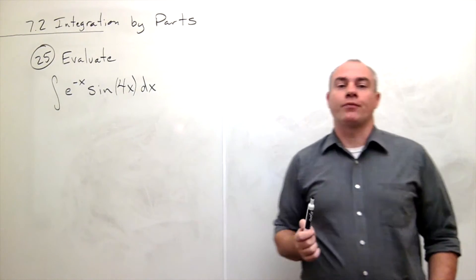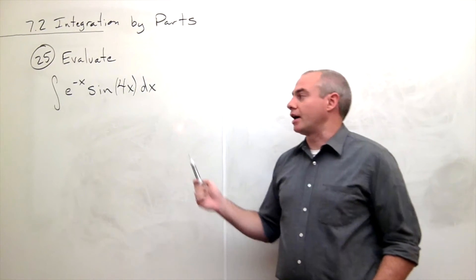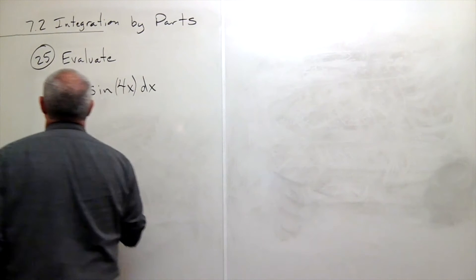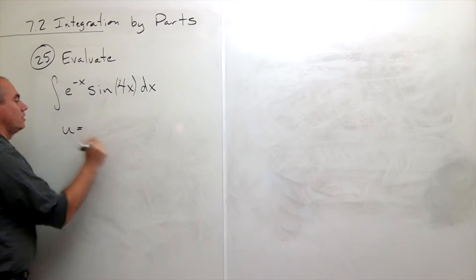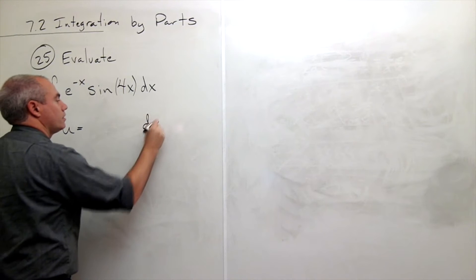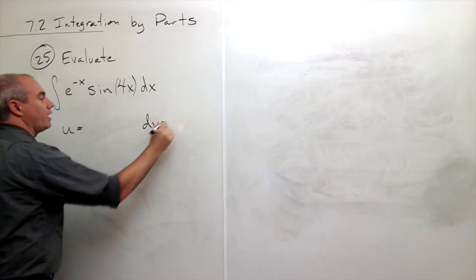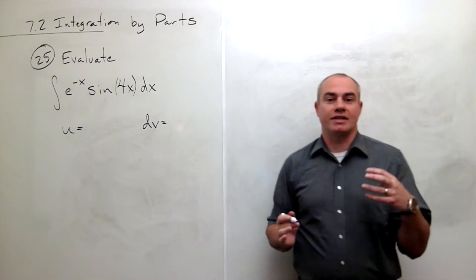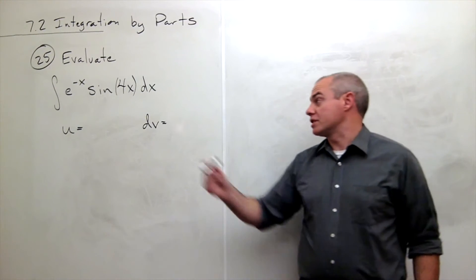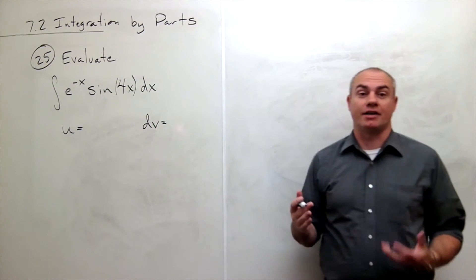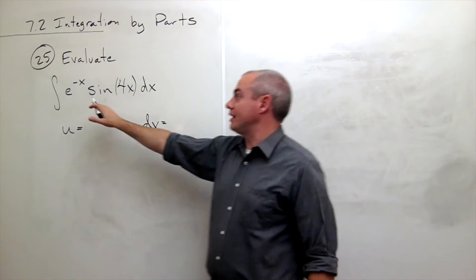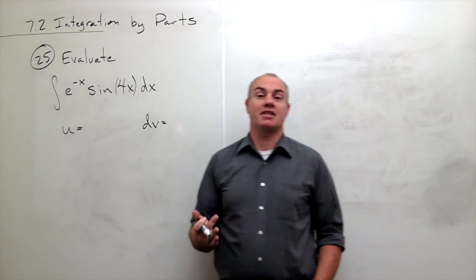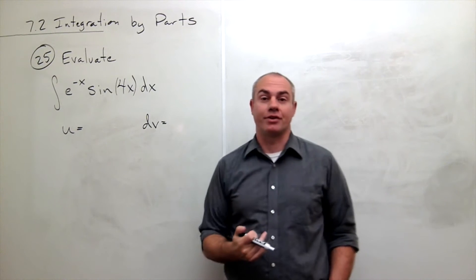If we're going to integrate this using integration by parts, then I need to start out by choosing a u and a dv. Typically I want to choose a u that I can take the derivative of and a dv that I can take an anti-derivative of. In this case, either one works just fine — I can take the derivative and anti-derivative of both of those things.